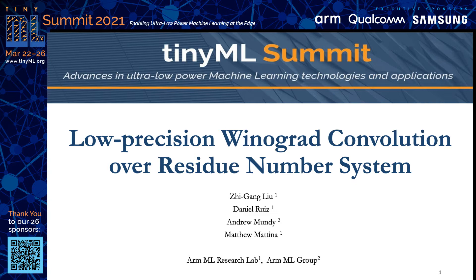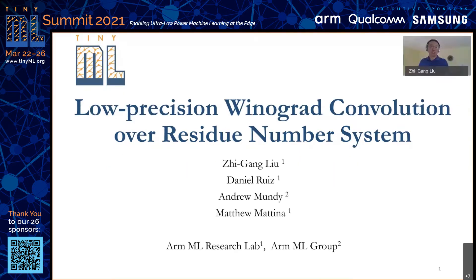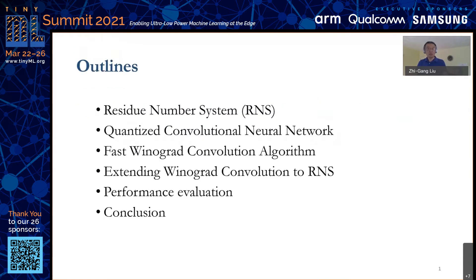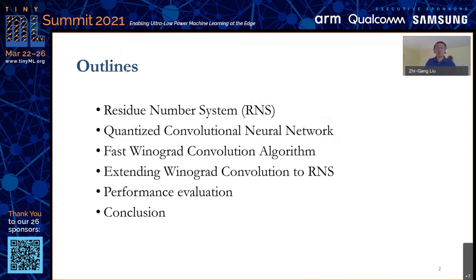Thanks for the introduction. The title of my presentation is Low-Precision Winograd Convolution Over Residue Number System. We construct a novel algorithm by combining the fast Winograd convolution under the residue number system to enable low-precision convolution for efficient inference.